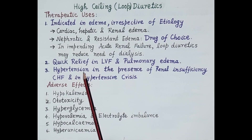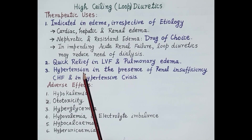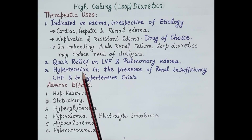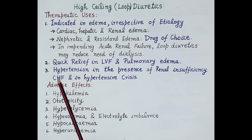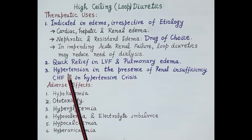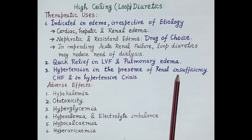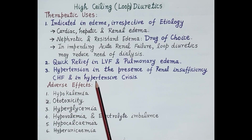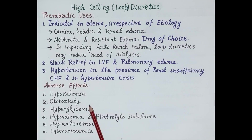Diuretics reduce blood volume, which reduces cardiac output. Since blood pressure equals cardiac output multiplied by peripheral resistance, a fall in cardiac output reduces blood pressure. Loop diuretics are therefore useful in hypertension, especially in the presence of renal insufficiency, congestive heart failure, and hypertensive crisis.